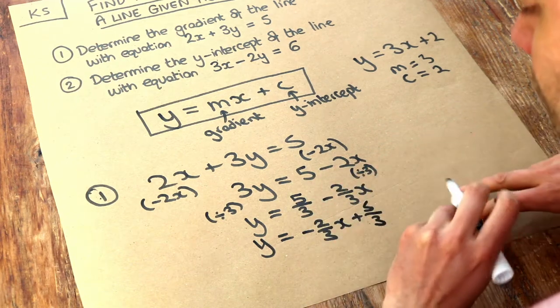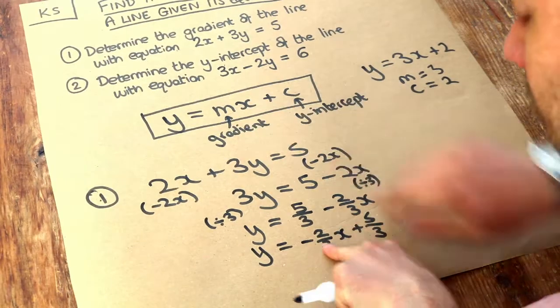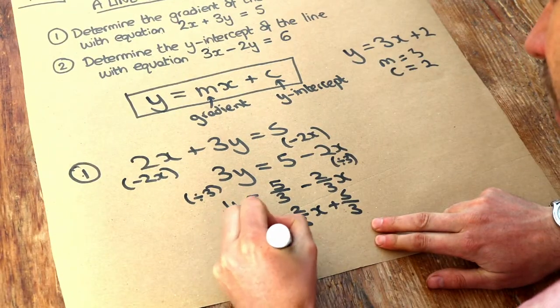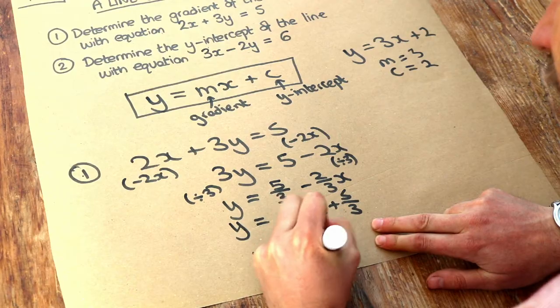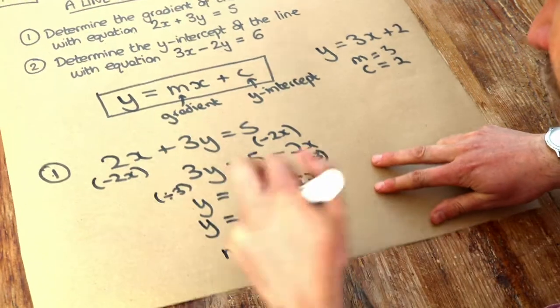Now can you see that the number in front of the x is the m. So we can see the gradient is minus 2 thirds, and the y-intercept is that constant term, the number without the x, that's 5 thirds.